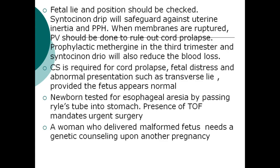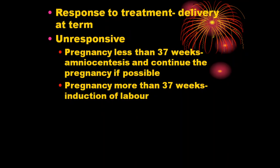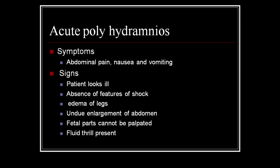If the fetus appears normal, the newborn should be tested for esophageal atresia by passing a Ryles tube into the stomach. Presence of tracheoesophageal fistula mandates urgent surgery. A woman who delivers a malformed fetus needs genetic counseling for another pregnancy. If unresponsive to treatment and pregnancy is less than 37 weeks, perform amniocentesis and continue the pregnancy if possible. If pregnancy is more than 37 weeks, induce labor.